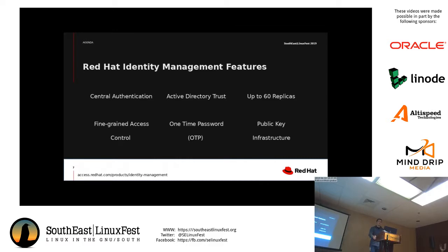Identity management also comes with fine-grained access control and host-based access control, which means you can get very specific with what machines you want your users or groups of users to access. There's also one-time password support, so you can use apps on your phone like FreeOTP or Google Authenticator. Identity management will generate QR codes for your users, and if you enable a one-time password on specific users, it will ask them for their PIN and token code separately whenever they authenticate to an IPA client. There's also certificate management — public key infrastructure.